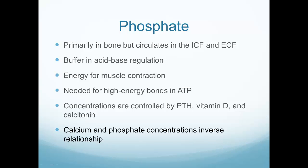Our next electrolyte is phosphate. Phosphate is found primarily in the bone but it circulates throughout the intracellular and extracellular fluid. It's a buffer used in our acid-base regulation. It's also used for muscle contraction — very important because it is needed for that high-energy bond, that component of ATP — adenosine triphosphate. We need phosphate in order to make ATP. ATP is necessary to run the vital functions of the body; it's the energy source for muscle contraction.